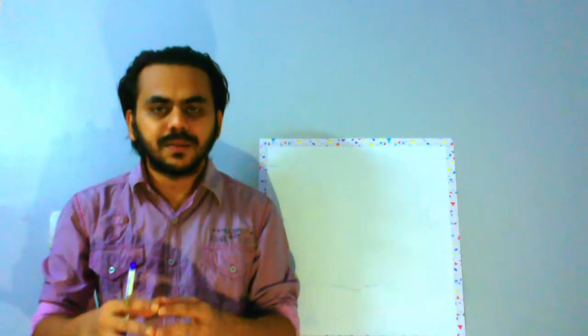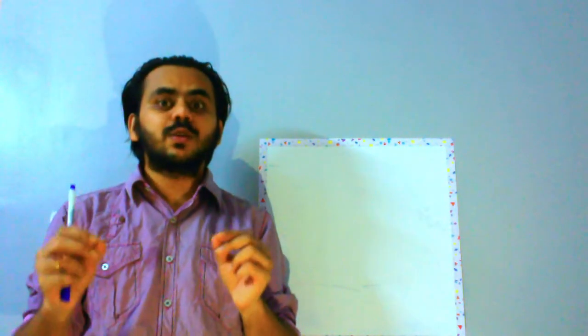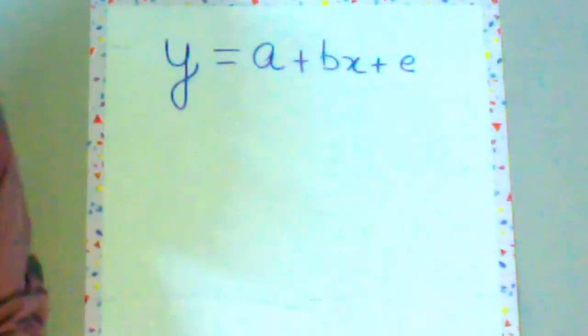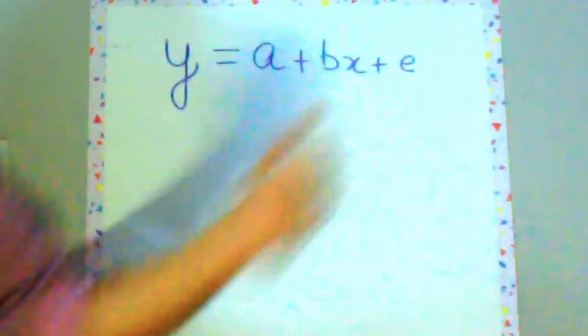So before we begin let's just recall what we were doing so far y is equal to a plus bx plus e. Over here we just had one predictor which is x.